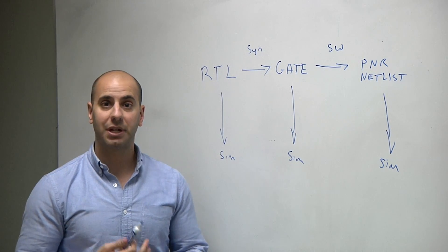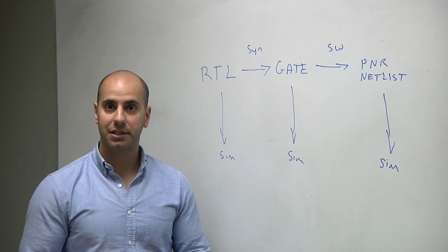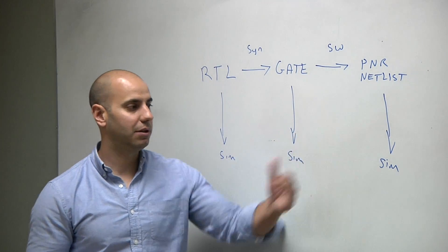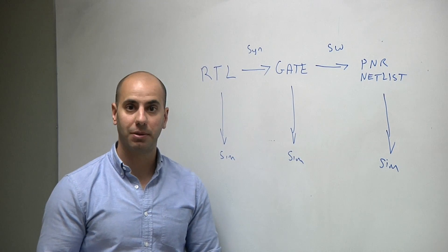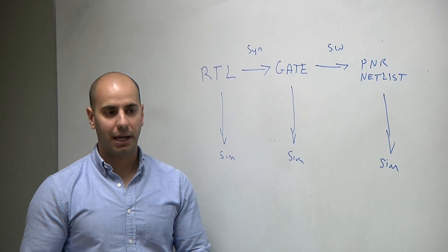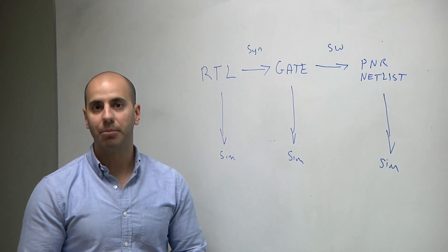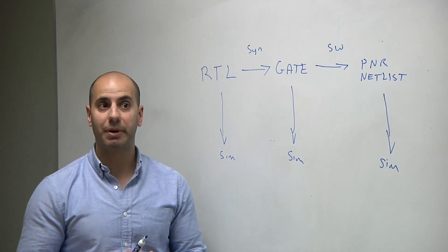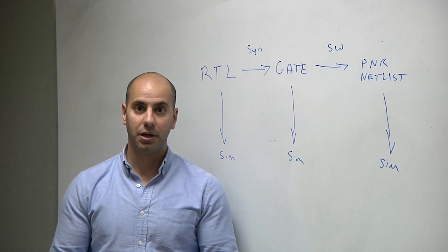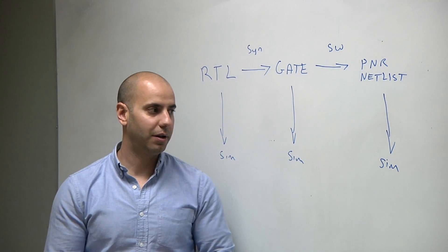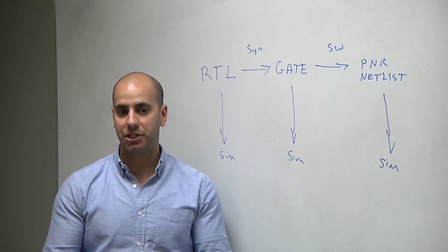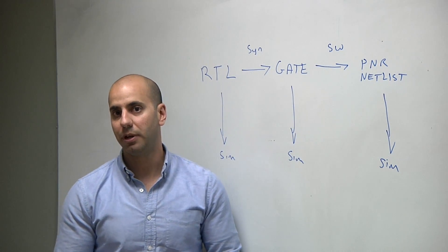When it comes time to actually running these designs on hardware, you simply take the resulting bitstream from this last step, program your FPGA, and run it on the board. It's really the responsibility of the FPGA vendor to make sure that their simulation models match the expectation that you'll have on silicon. So what's the difference when you go from a discrete FPGA to an embedded FPGA?